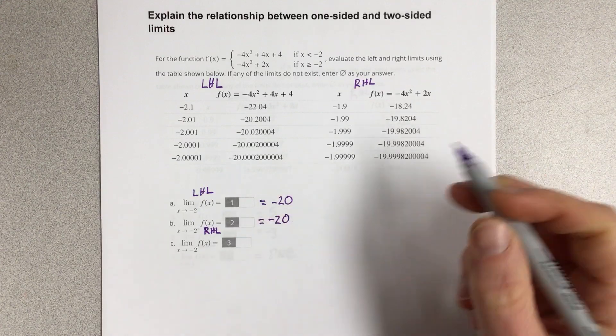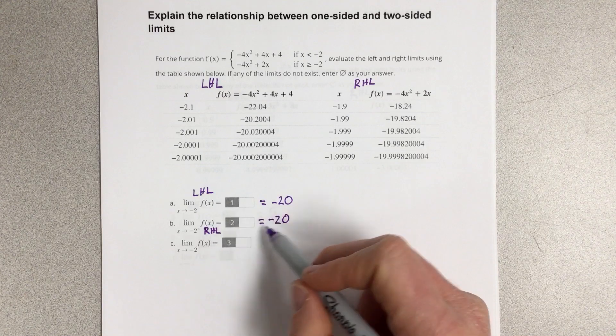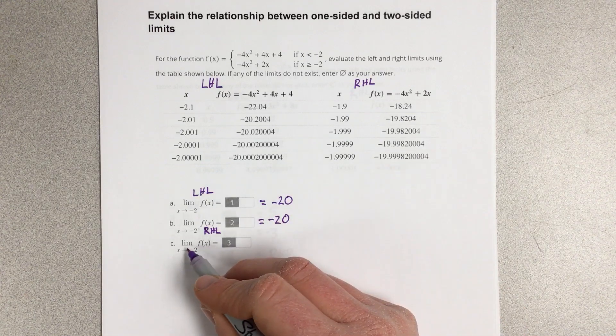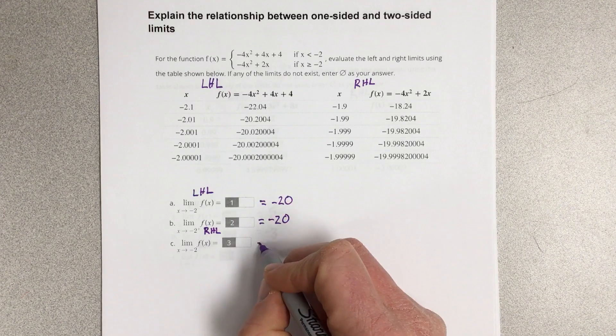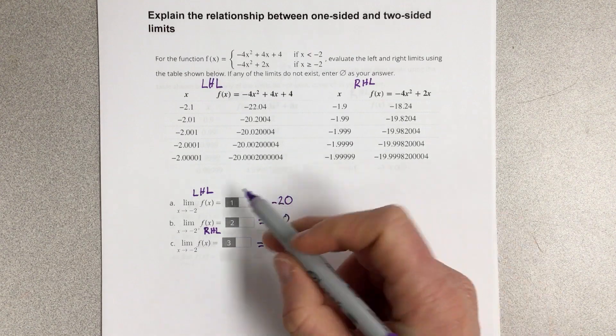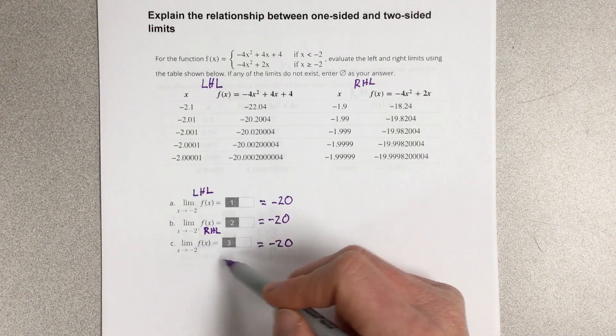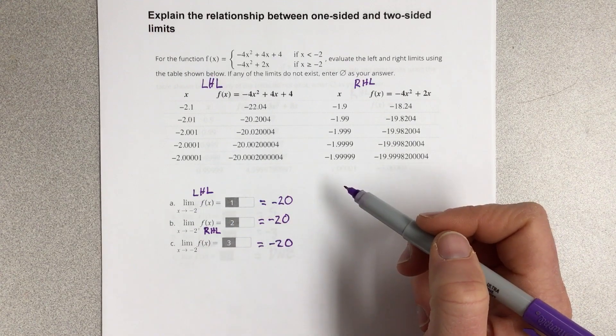Now, what that tells you is because both left-hand and right-hand limits are equaling negative 20 for their limits, the limit overall, as x approaches negative 2, also equals negative 20. So, if both the left-hand limit and the right-hand limit approach the same number, the overall limit will approach that number as well.